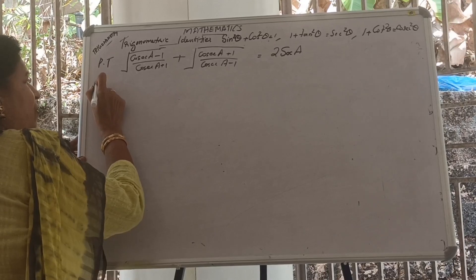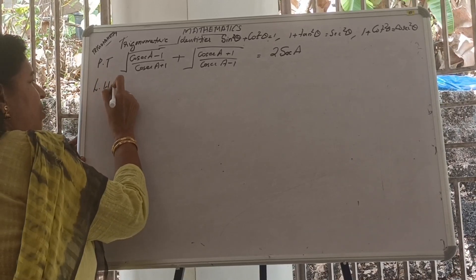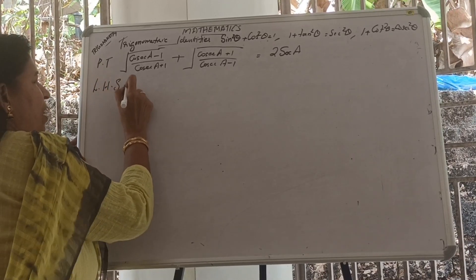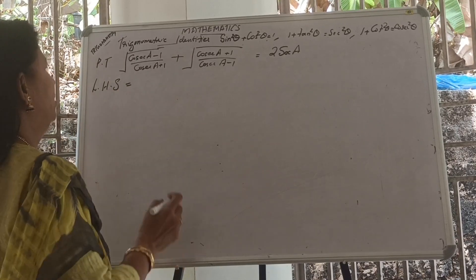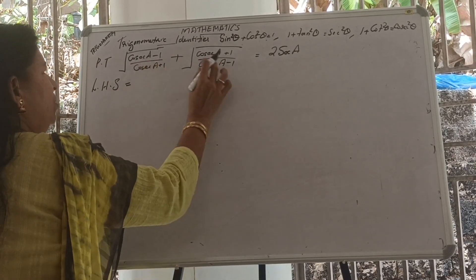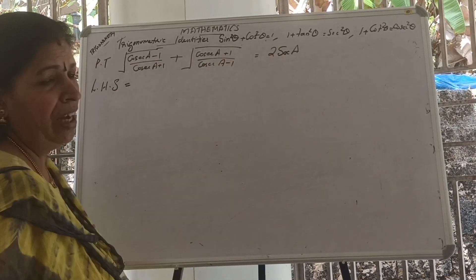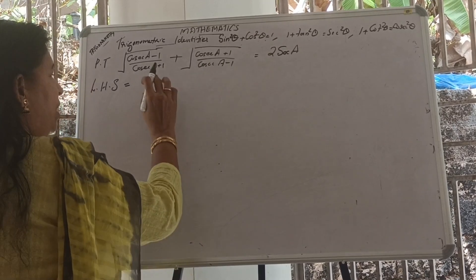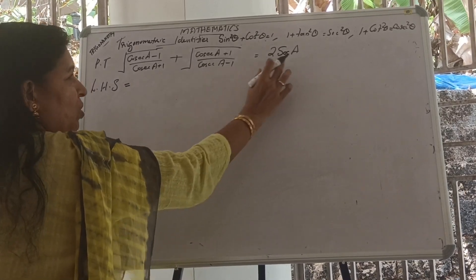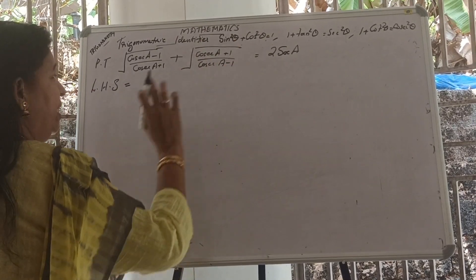Starting from the left hand side of this problem. LHS equals — by solving this LHS we have to reach the RHS. Our aim is to reach RHS, which is 2 cosec A.